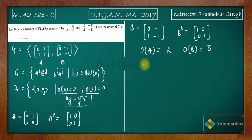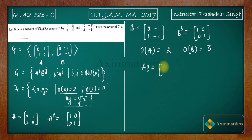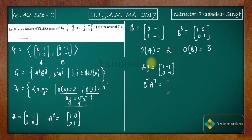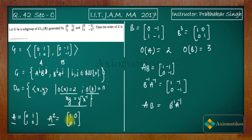Now I want to verify the dihedral property by calculating AB. If you calculate AB you get [[1,-1],[0,-1]], and if you calculate B⁻¹A⁻¹ you get the same thing: [[1,-1],[0,-1]]. That means AB = B⁻¹A⁻¹. So we have order of A equal to 2 and order of B equal to 3, and AB = B⁻¹A⁻¹.